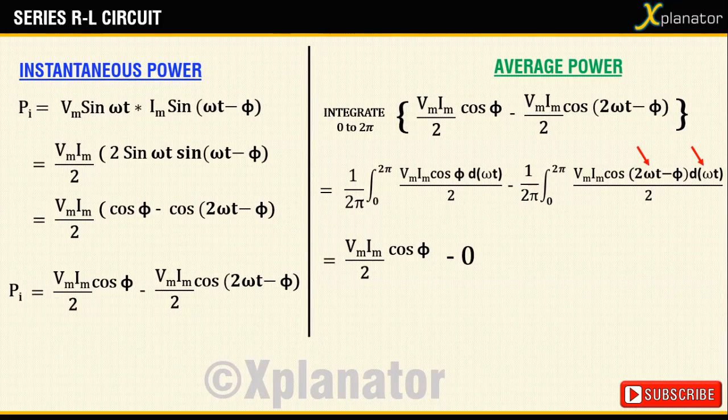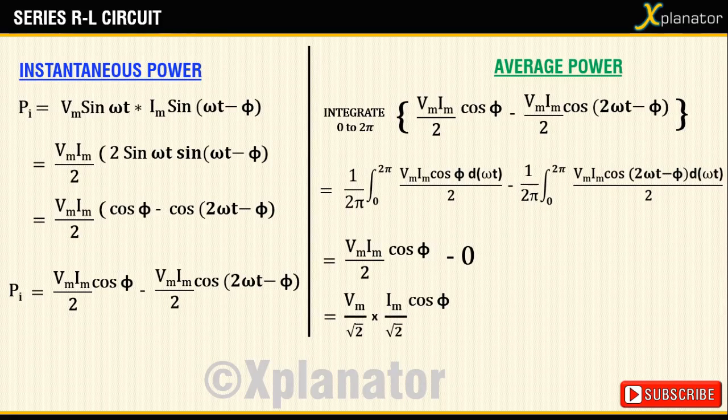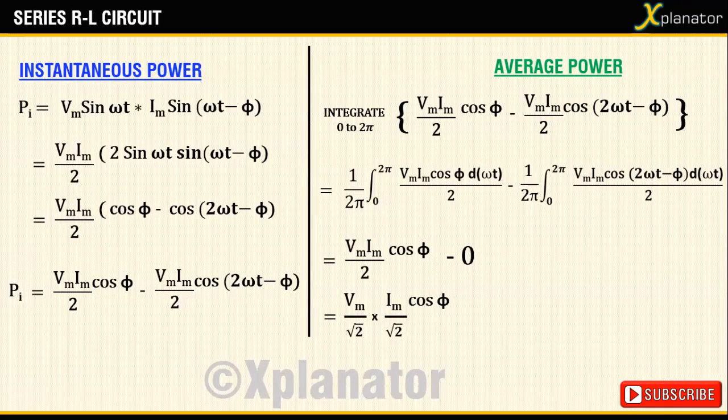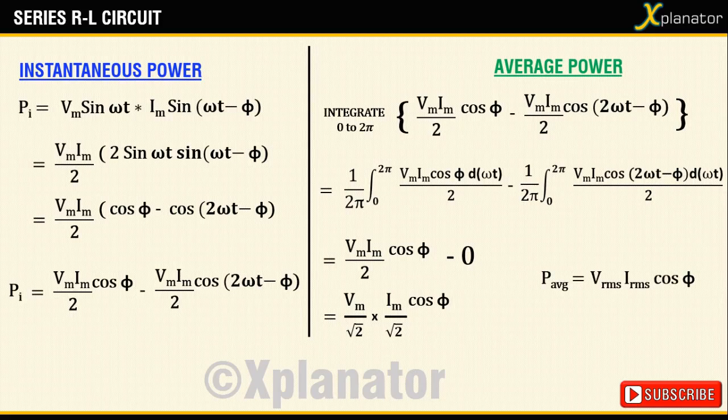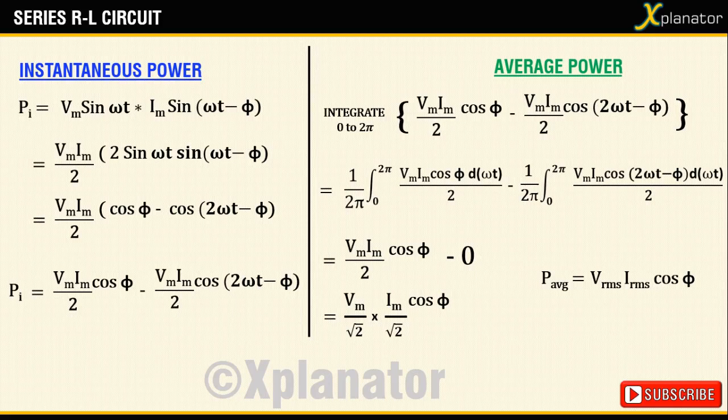The 2 in the denominator may be written as root 2 times root 2. Hence the equation simplifies to (Vm by root 2) times (Im by root 2), which can also be written as Vrms times Irms times cos phi.